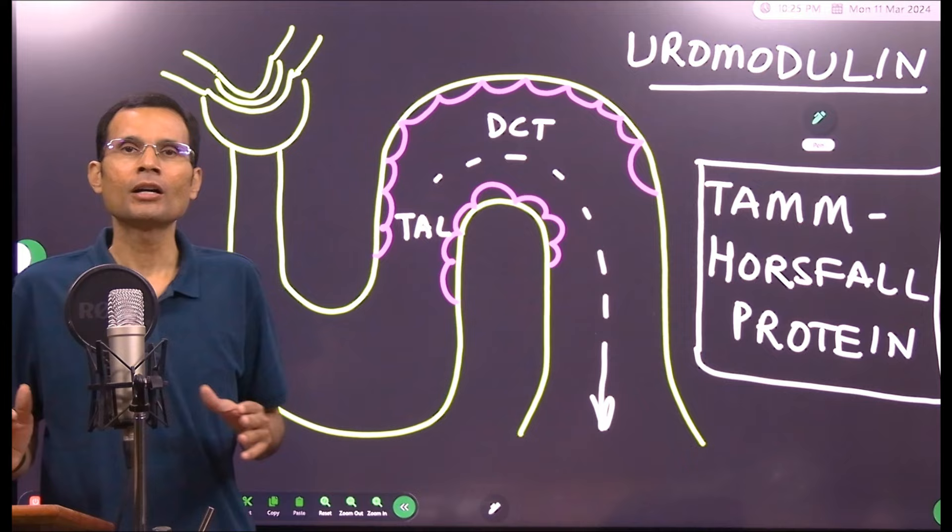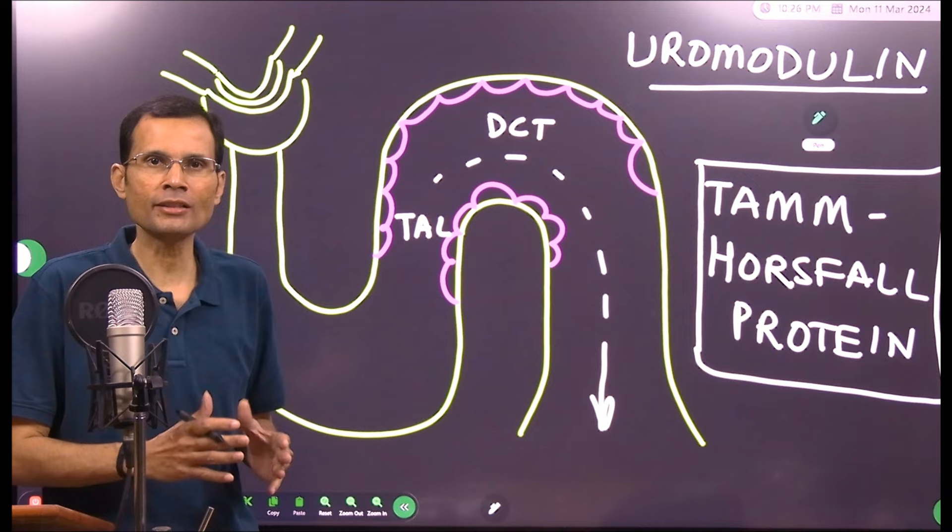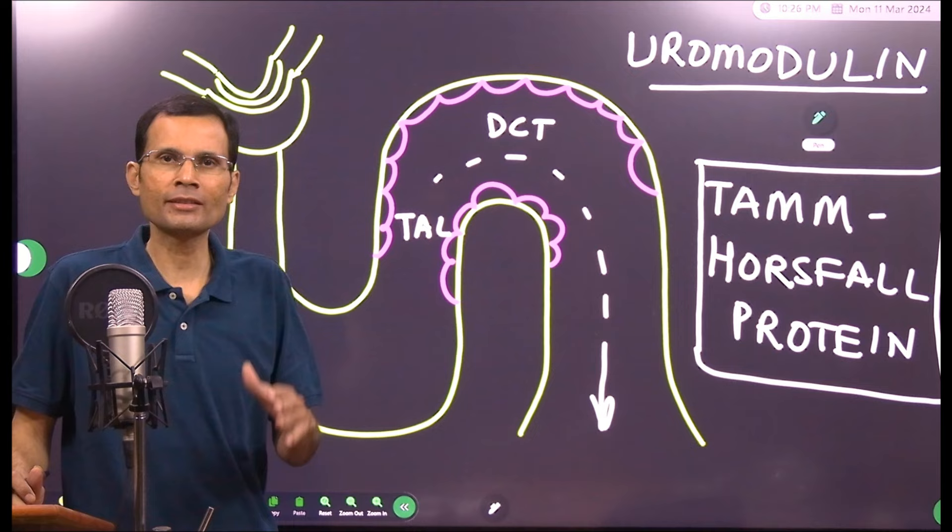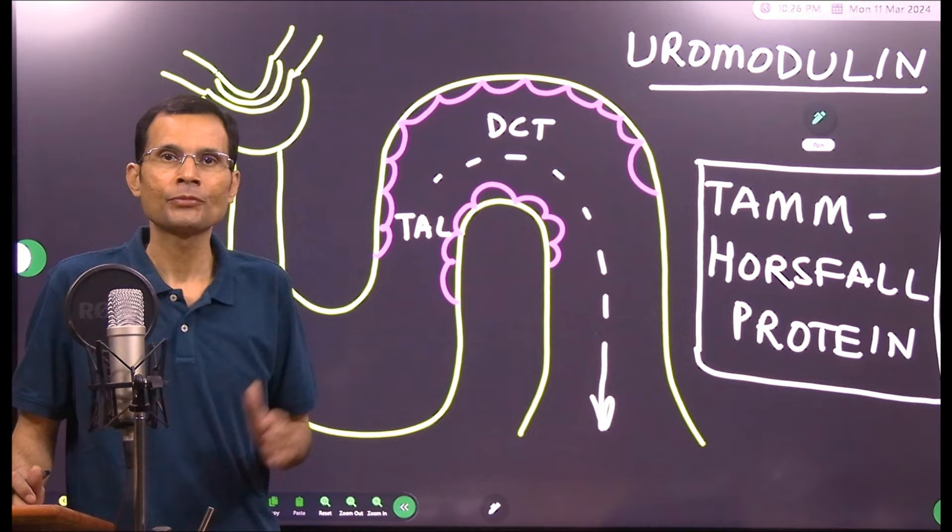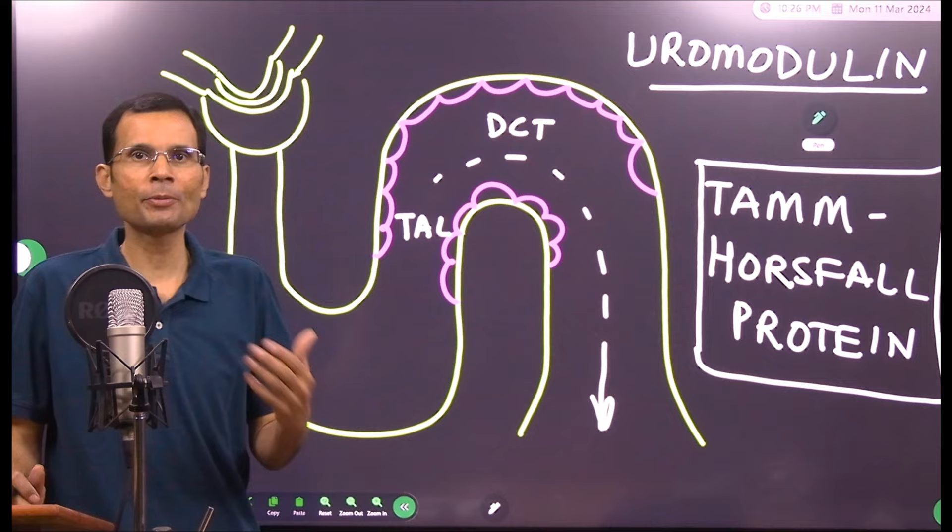Well this is a normal constituent of the urine and it is said to be a kind of a defense protein in the sense that it protects against some of the urinary tract infections and also it plays some role in the formation of the calcium containing renal calculi. Calcium containing renal stones, their formation is likely to be prevented by the presence of this protein in the urine. So that in a nutshell is about the Tamm-Horsfall protein also called as uromodulin.